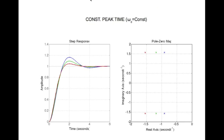Now let's look at a few MATLAB plots that illustrate this. Here the damped natural frequency omega d is constant — let's look at three systems on the same horizontal line. These are the corresponding step response graphs. It looks like all three systems hit the peak time at two seconds. They have different overshoots and different settling times, but they all share the same peak time, which means their roots lie on the same horizontal line.